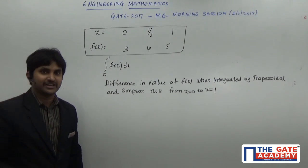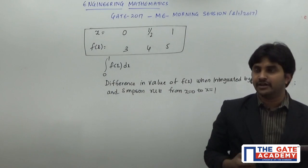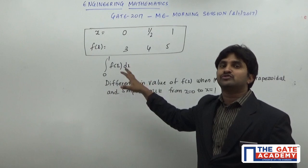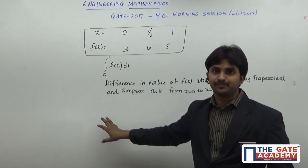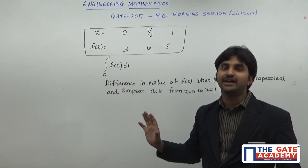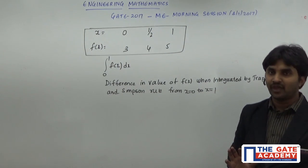Now the conventional method is that, the actual method of solving is that we have to use the trapezoidal method and find the value, we have to use the Simpson's method and find the value, and then we have to see the difference between both the values. Then you have to write the answer what you are getting.